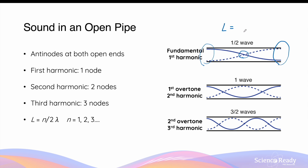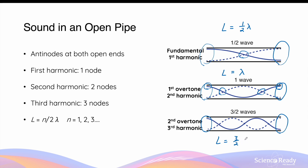For the fundamental frequency, the node occurs midway inside the open pipe, and the length of the pipe equals exactly half the wavelength of the standing wave. The next frequency is the second harmonic or first overtone — here, antinodes occur at the two open ends and the length of the pipe equals exactly one wavelength. The third harmonic or second overtone has antinodes at the two open ends, and the length of the pipe equals three-halves of the wavelength.